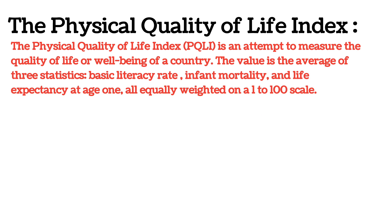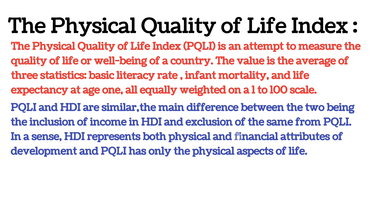Physical Quality of Life Index किसी देश के जीवन की गुणवत्ता या भलाई को नापने का एक कोशिश है. यह value तीन statistics का average है: basic literacy rate, infant mortality rate, और एक साल की उम्र में जीवन उम्मीद — सभी को 1 से 100 के पैमाने पर समान रूप से weighted किया जाता है. PQLI और HDI similar हैं; दोनों के बीच main difference HDI में income को शामिल करना और PQLI से इसे बाहर करना है. HDI, development की physical और financial दोनों विशेषताओं का representation करता है, जबकि PQLI में जीवन के केवल physical aspects होते हैं.